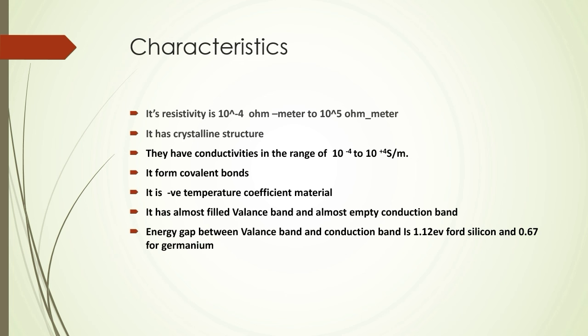Semiconductors have conductivities in the range of 10 to the power minus 4 to 10 to the power plus 4 siemens per meter. That is the range of conductivities of semiconductors. Another characteristic is that semiconductor material forms covalent bonds.